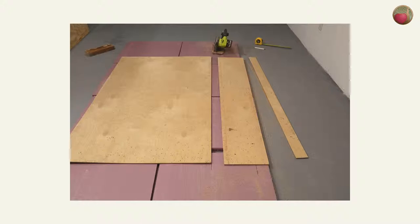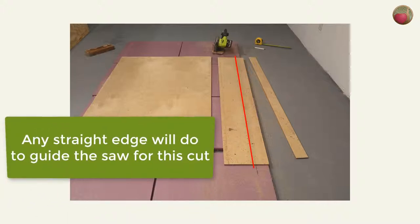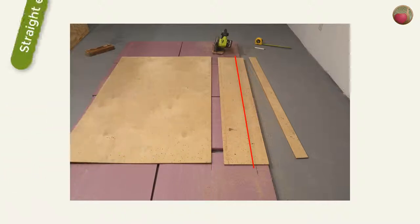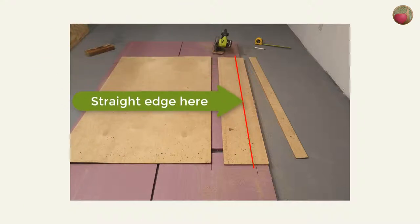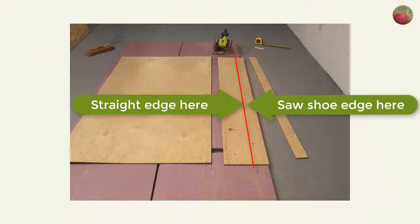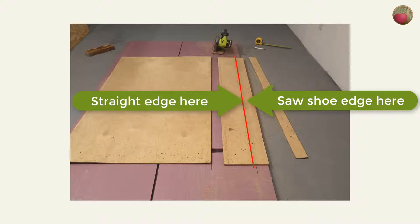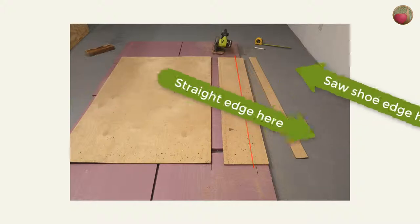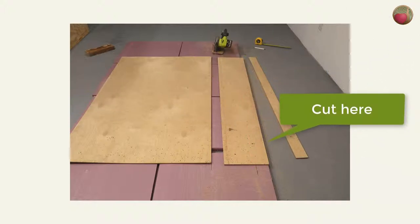Now, from your straight edge line that you just marked, measure and mark another line that is the width of your saw shoe. Mine was four inches. Then, lay another sheet of plywood on top of the one that you're cutting with the factory edge on that second line you just marked. This top plywood will serve as your straight edge for this first cut. Go ahead and make the cut and then set your new guide board aside for now.